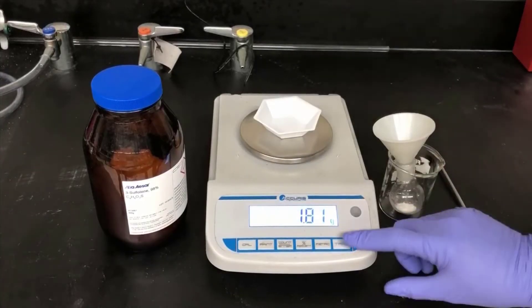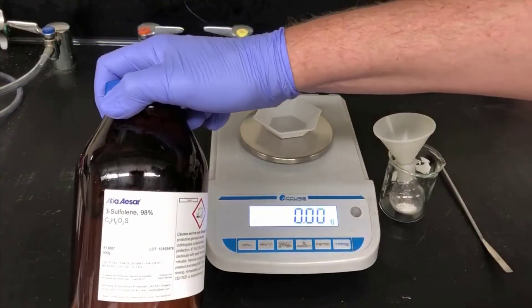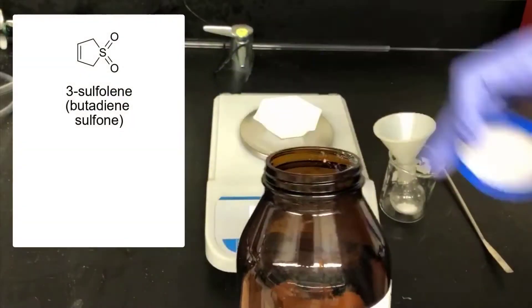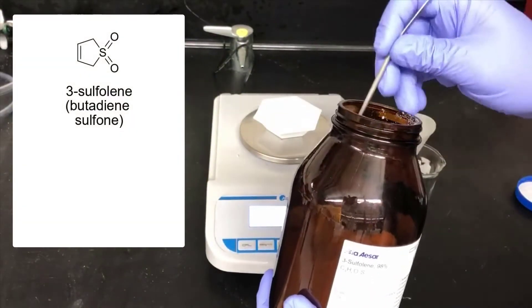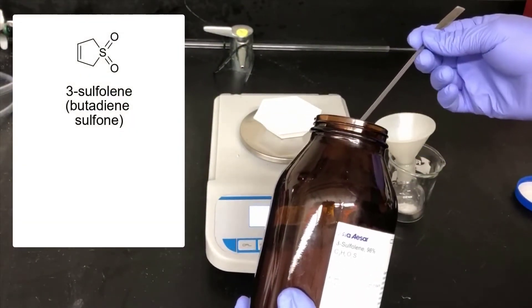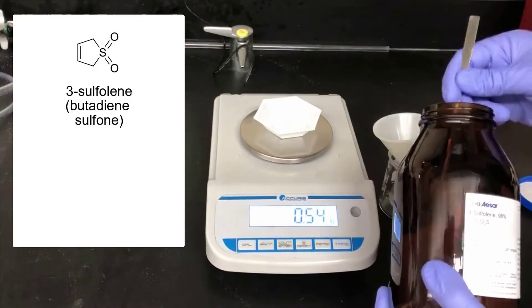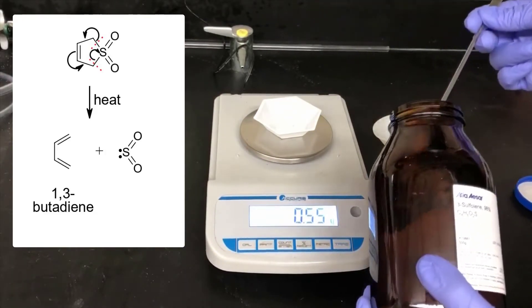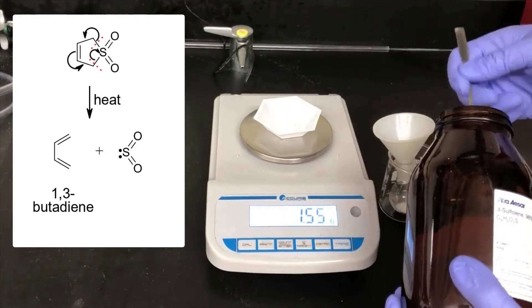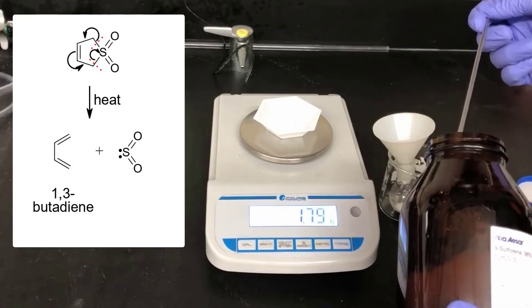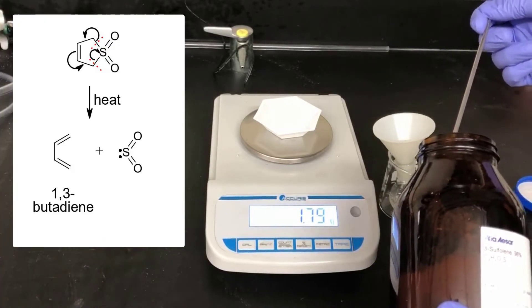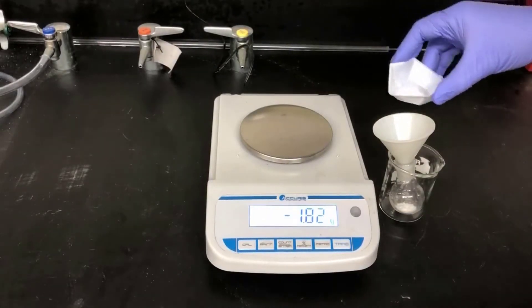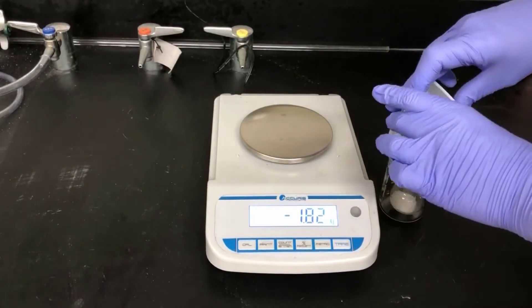The next reagent I'll weigh out is 3-sulfolene. It's also commonly known as butadiene sulfone, so you might see it as one way or the other on the bottle. This is a precursor to the diene in today's experiment. And when heated, it'll fragment into these two pieces, 1,3-butadiene and sulfur dioxide. The 1,3-butadiene is the diene in the Diels-Alder reaction. Now I'll add the 3-sulfolene to the flask with the maleic anhydride.